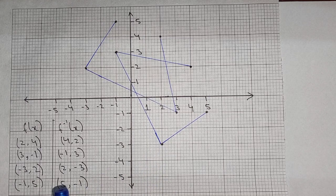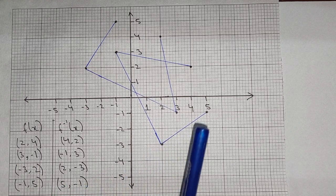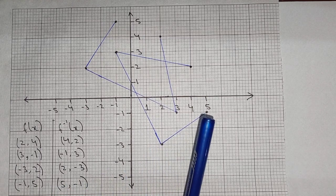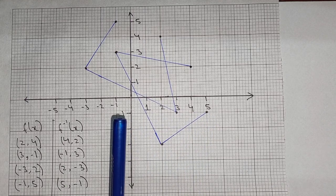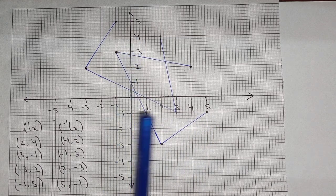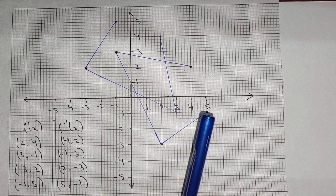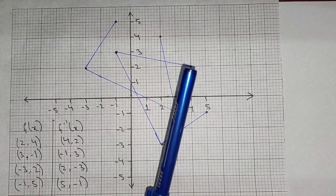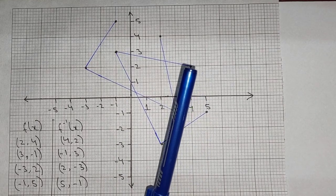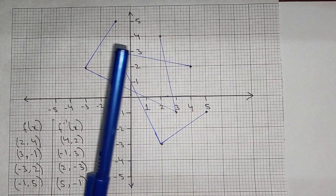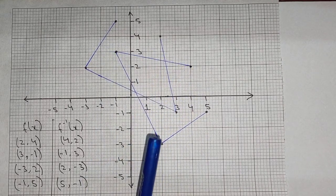And 5 and minus 1 — so 5 with respect to the x-axis and minus 1 with respect to the y-axis — this dot over here. Now we will join the dots in this way.